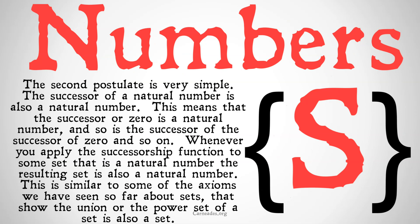The second postulate is very simple. It just states that the successor of a natural number is also a natural number. This means that the successor of zero is a natural number, and so is the successor of the successor of zero, and so on. Whenever you apply the successorship function to some set that is a natural number — a member of the set of all natural numbers — the resulting set is also a member of the set of all natural numbers.